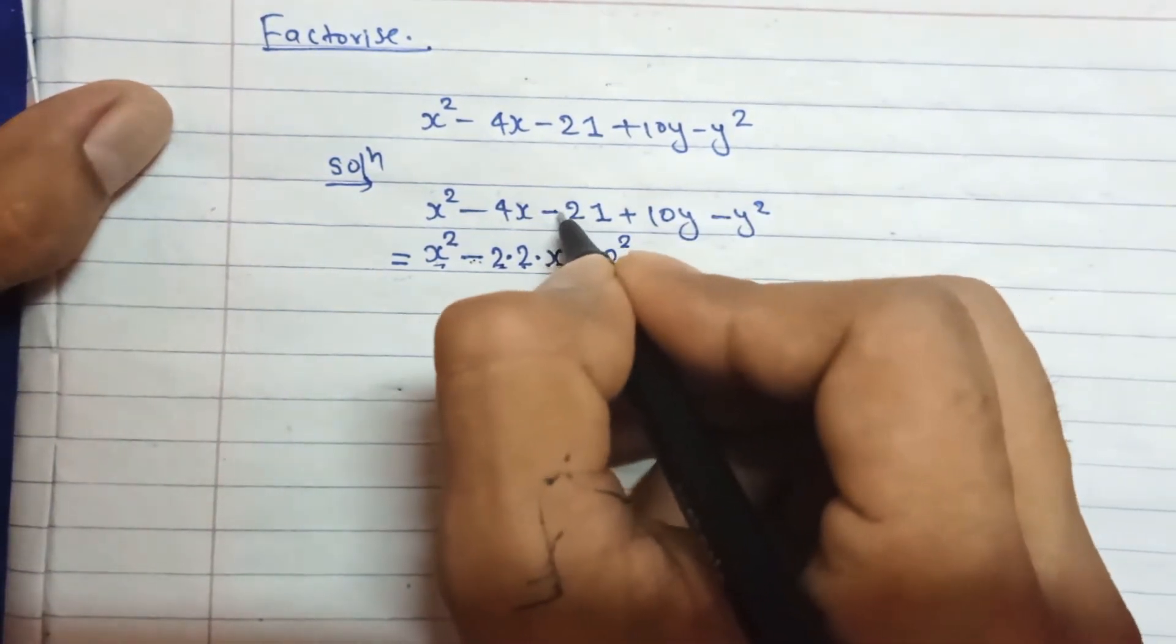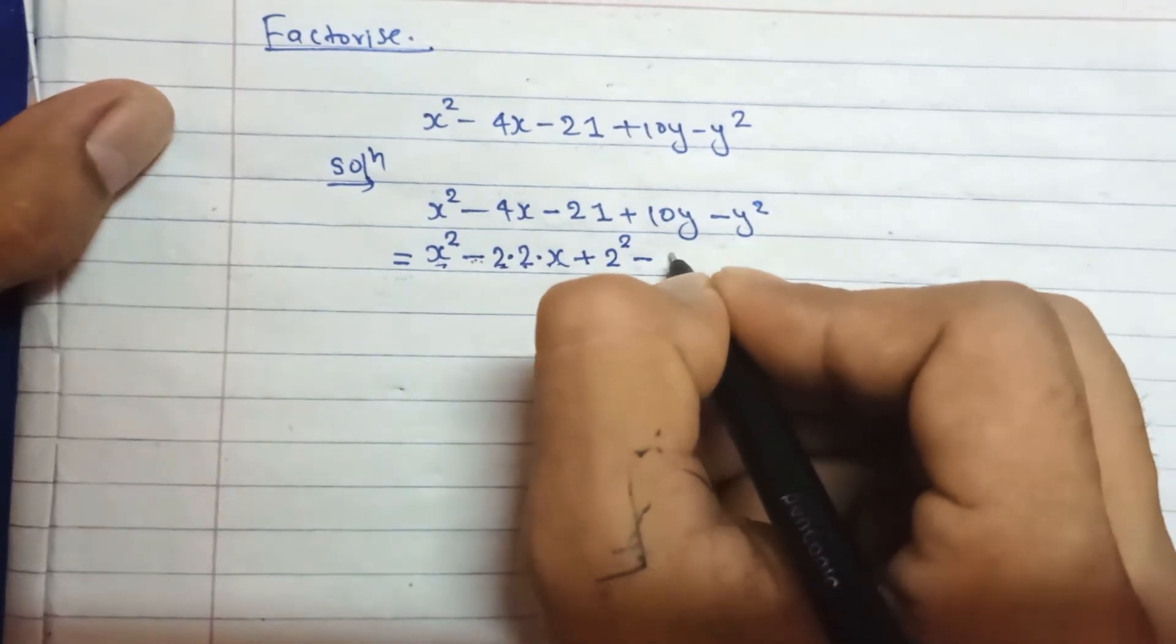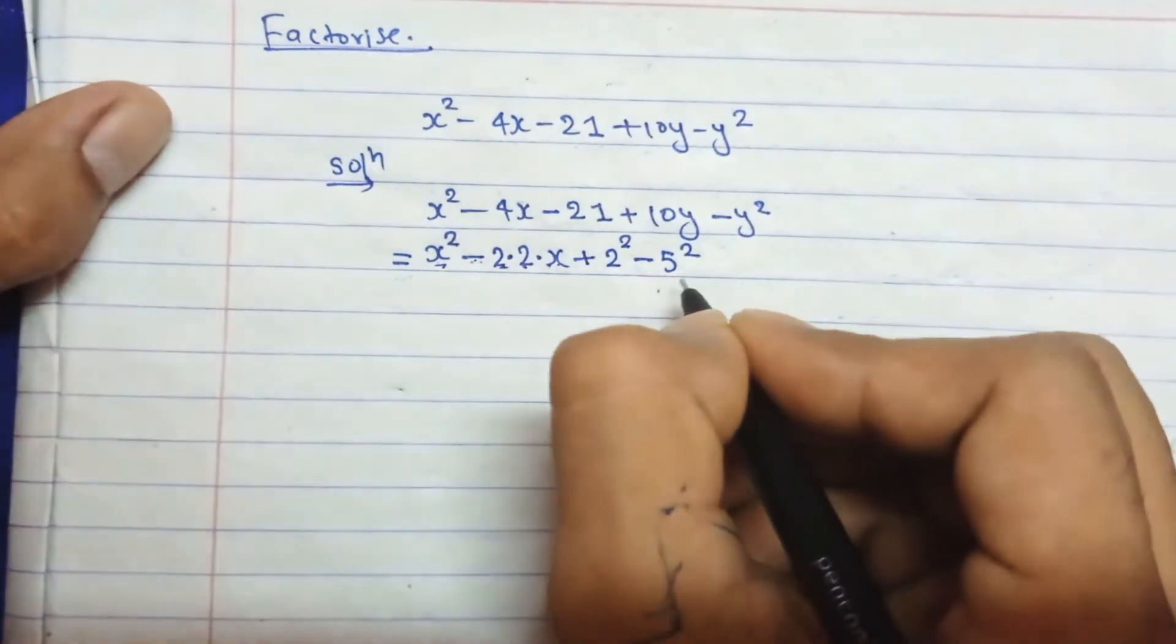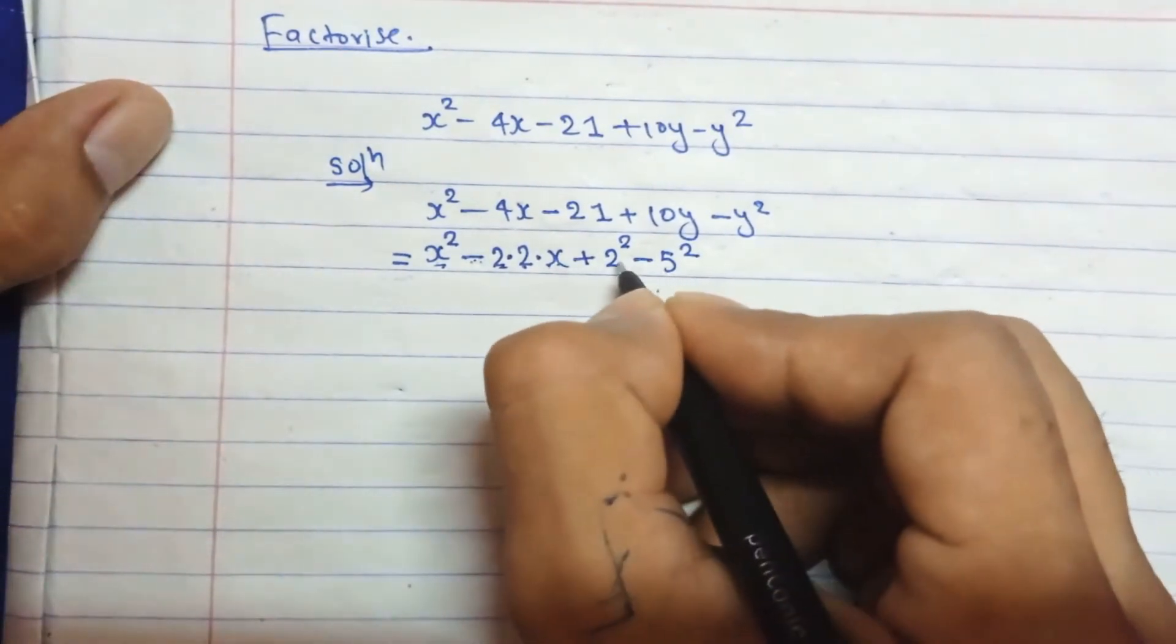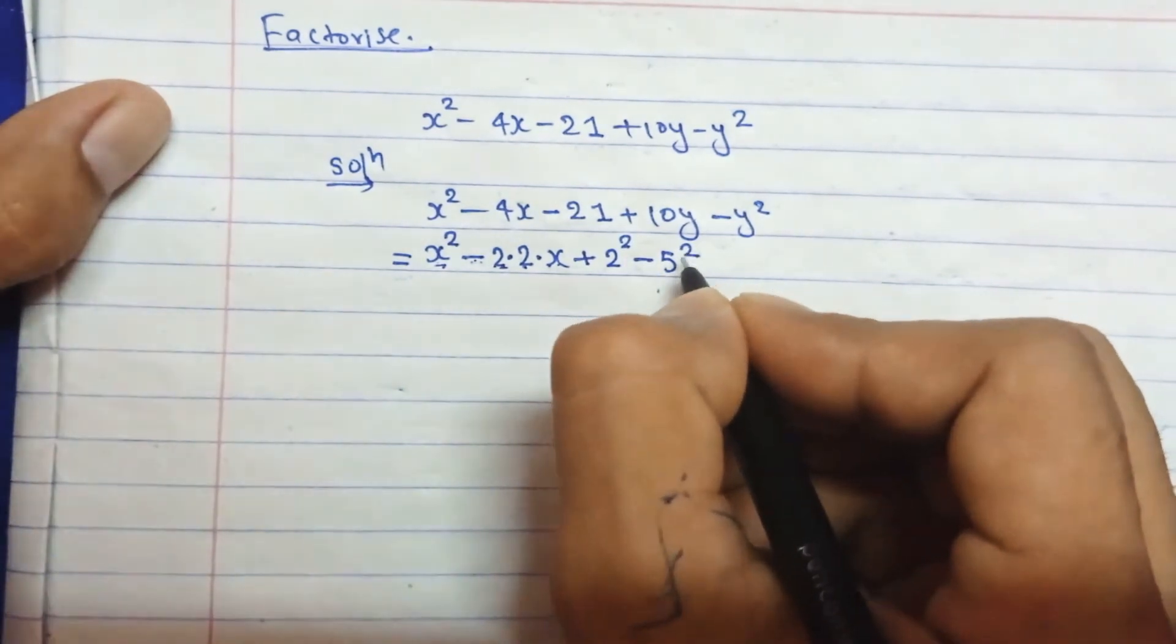To get the -21 here, you will have to subtract -5². So you get here if you break and solve it, 2 times 2 is 4 and 5 times 5 is 25.